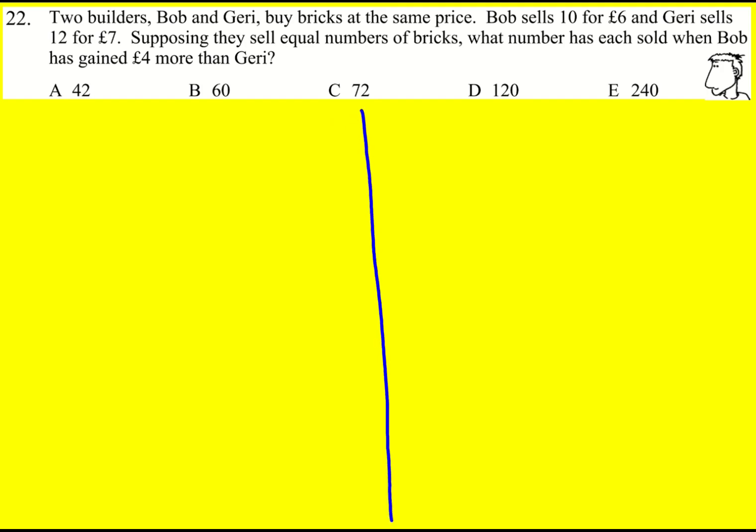There are two approaches for doing this question. First up, probably a slightly nicer approach: let's find the price for the builders to sell the same number of bricks. So let's find the lowest common multiple of 10 and 12. They actually share a common factor of 2, so it's not just going to be 10 times 12, although you could work out how much to sell 120 bricks. But actually the lowest common multiple is 60.